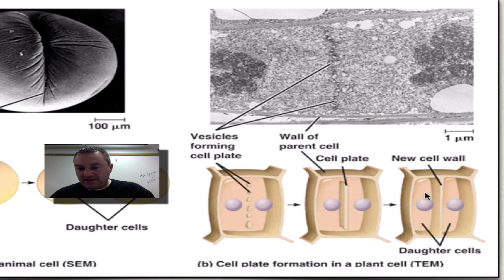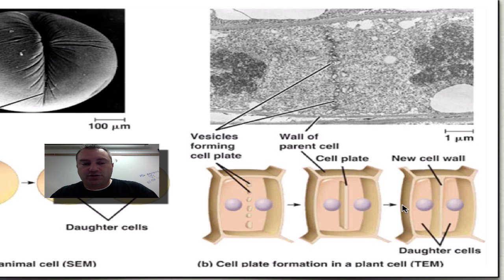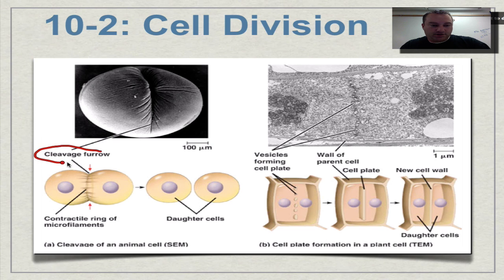Now these two cells are going to be able to double their size like all cells do, but they're going to be limited in their shape because this cell wall can only expand so much. So remember, when it comes to animal cells, you've got a cleavage furrow. And when it comes to plant cells, you've got a cell plate. Let's circle those so you don't forget — animal cells: cleavage furrow; plant cells: cell plate.